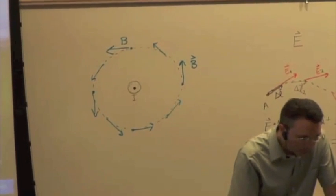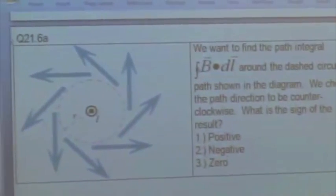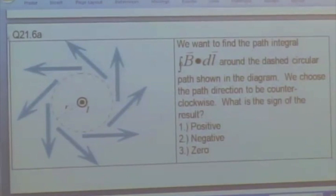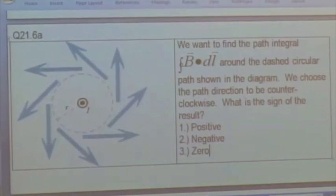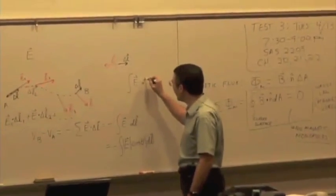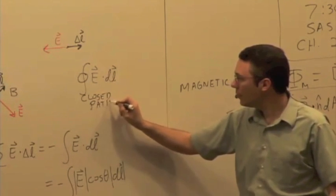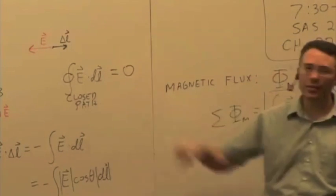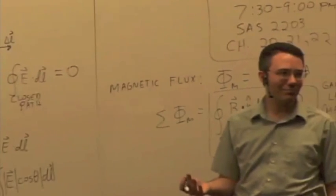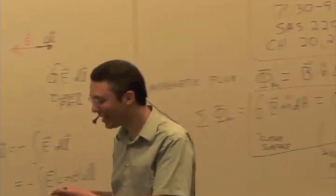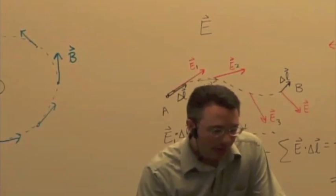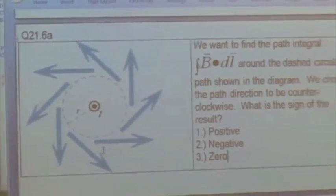Imagine doing the exact same thing we did for electric fields when calculating potential differences — now doing the path integral of magnetic field along a closed path. What's the path integral of electric field along a closed path? It should give you zero — that's the round-trip potential difference. But clearly for magnetic fields it's not going to be zero, because we have this circular pattern of magnetic field, which we said for electric fields was impossible.